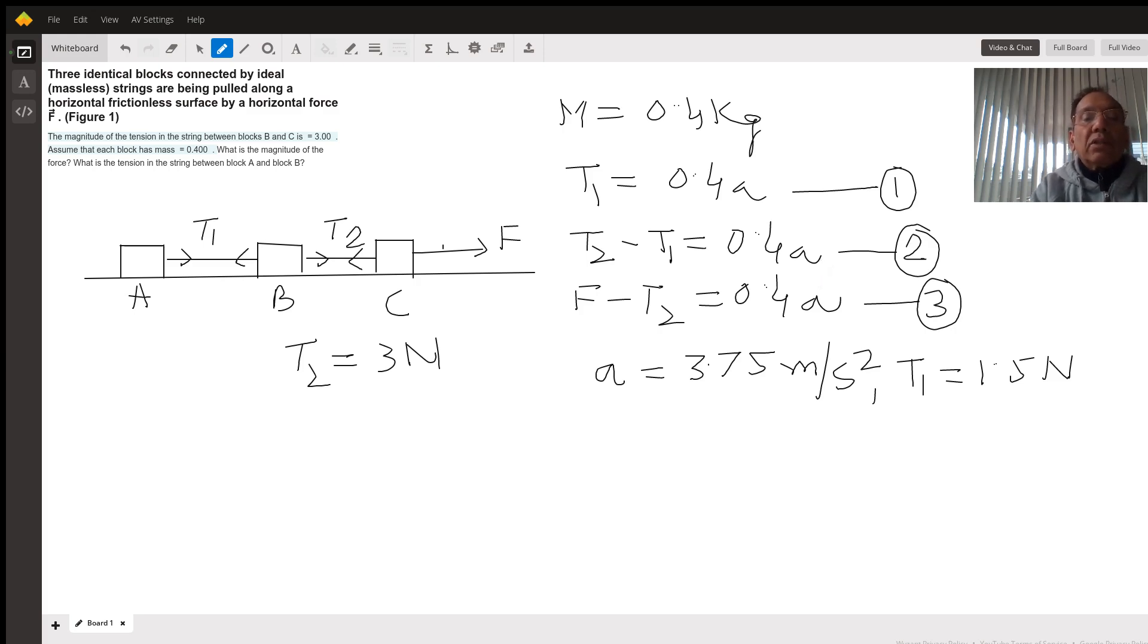Likewise, for the third mass, which is 0.4 kilograms, F minus T2 equals 0.4a. That's the third equation.